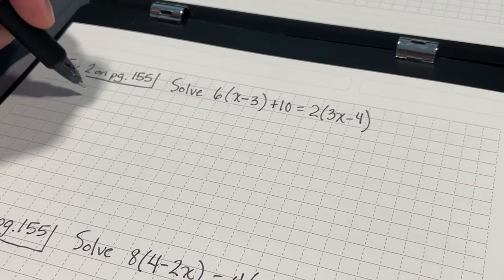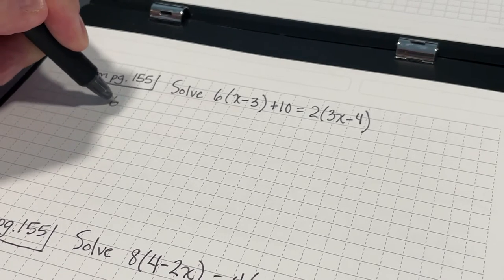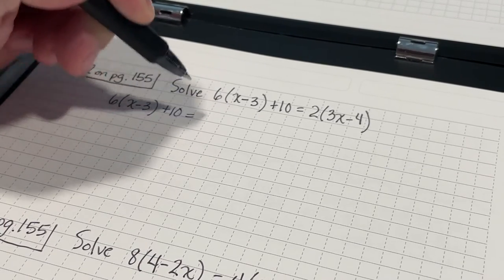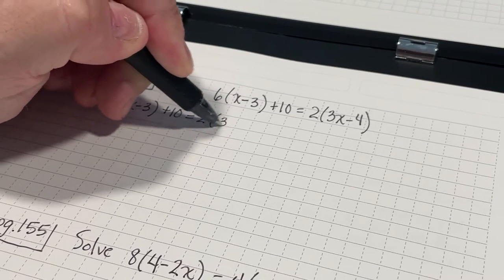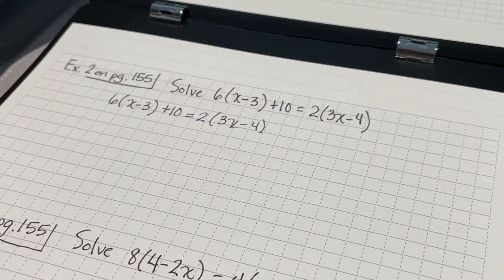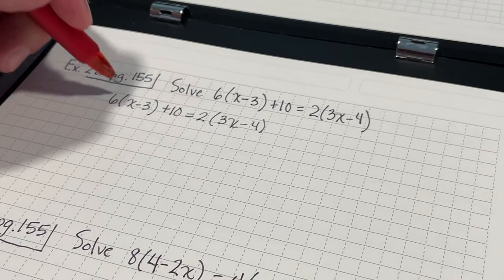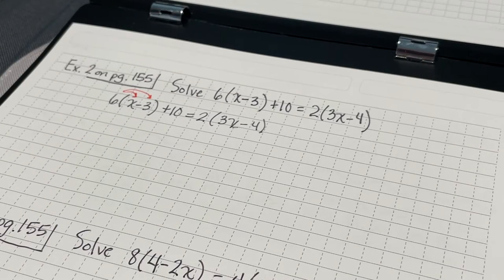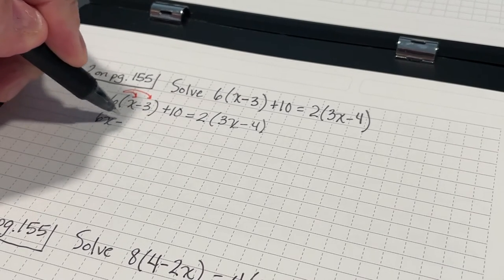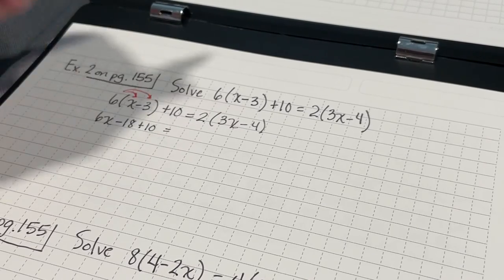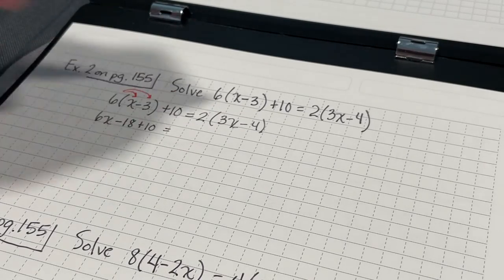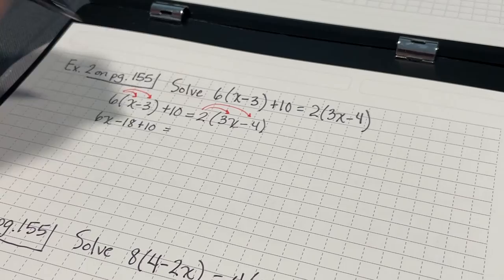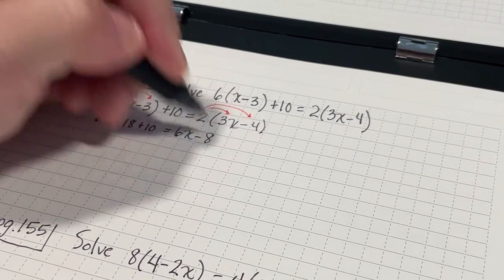Example 2 on page 155 says: 6 times the quantity X minus 3 plus 10 equals 2 times 3X minus 4. I'm going to distribute the 6 to both terms here, which gives me 6X minus 18 plus 10 equals, and I'm going to distribute the 2 to both terms inside the parentheses, giving me 6X minus 8.